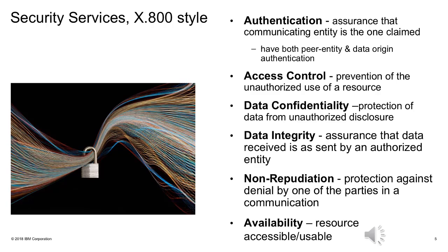The non-repudiation aspect means that both Alice and Bob in a message transaction cannot deny that the transaction occurred. Alice can prove that she sent the message and Bob received it; Bob can prove that Alice sent the message and he received it — no ambiguity. This is extremely important in financial services, both banking and insurance, where we need to remove any capability of saying, "I didn't do that."